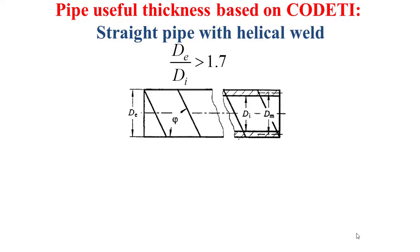And in the framework of this case, the useful thickness of the pipe should be no less than the greatest value between the calculated thickness based on the formulas that you see now in this slide.